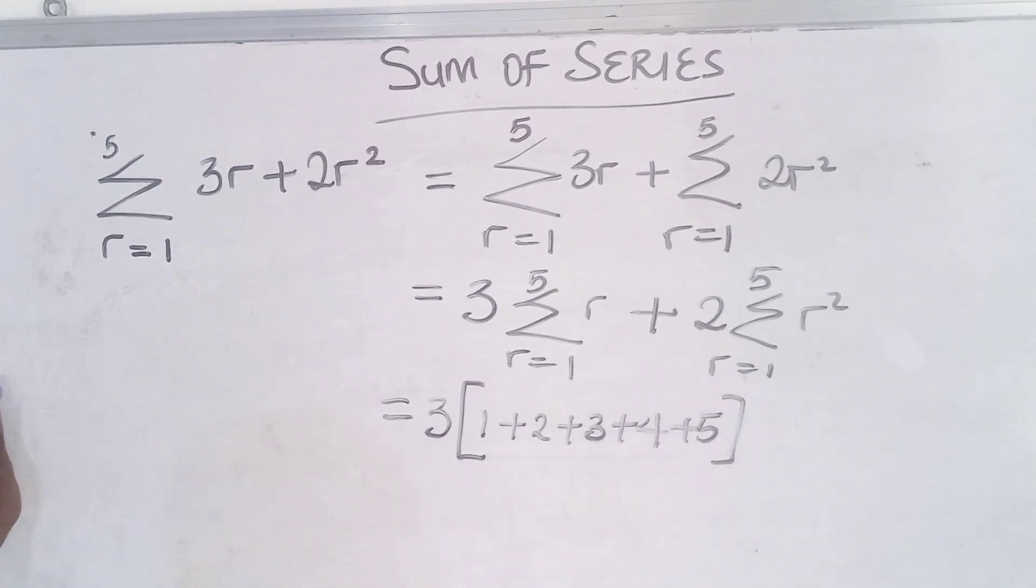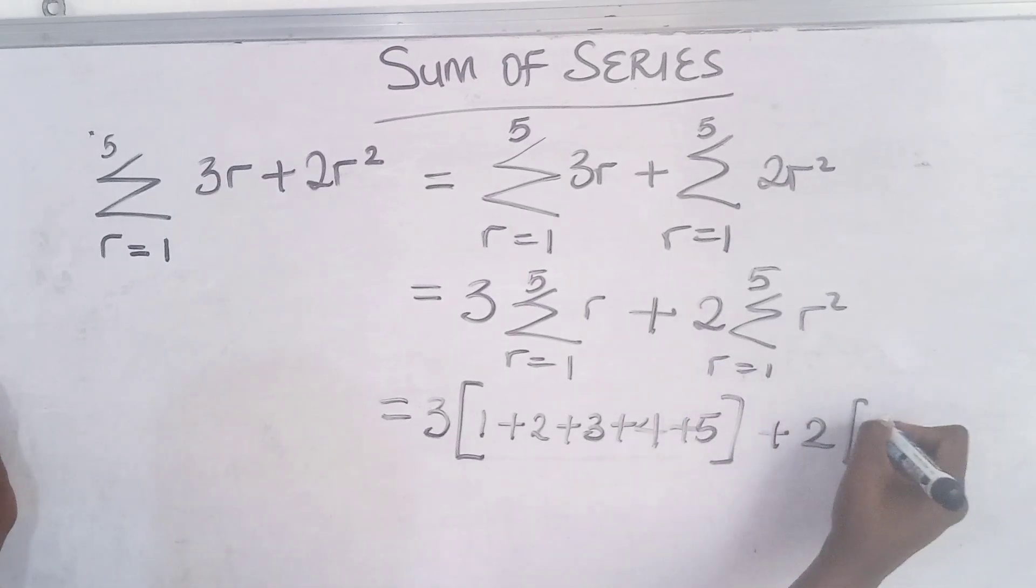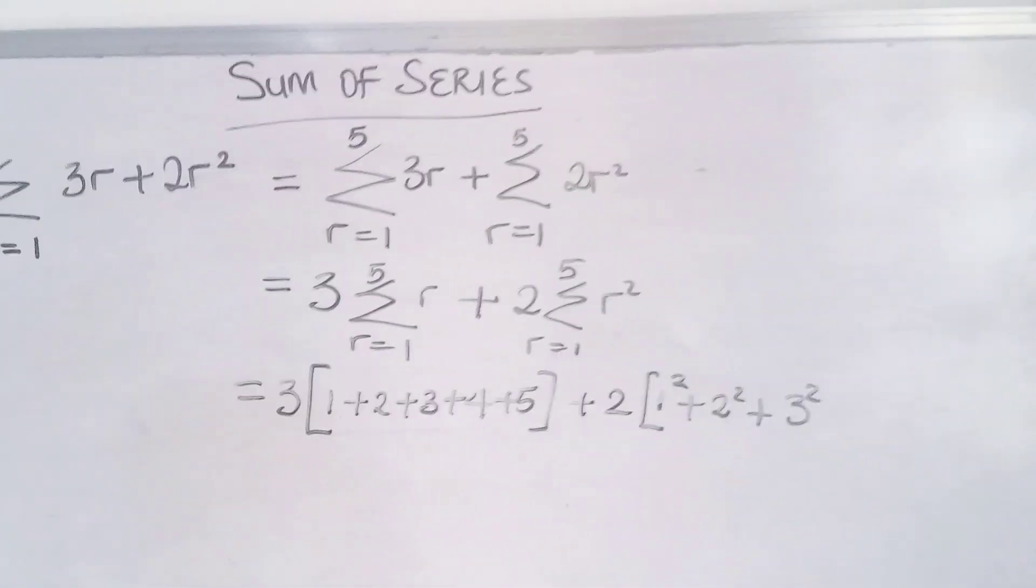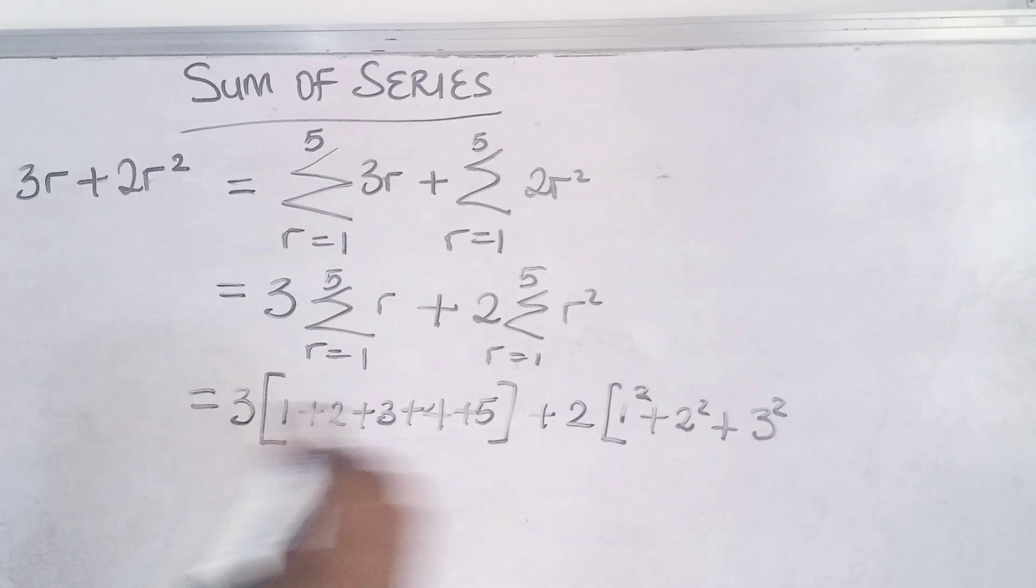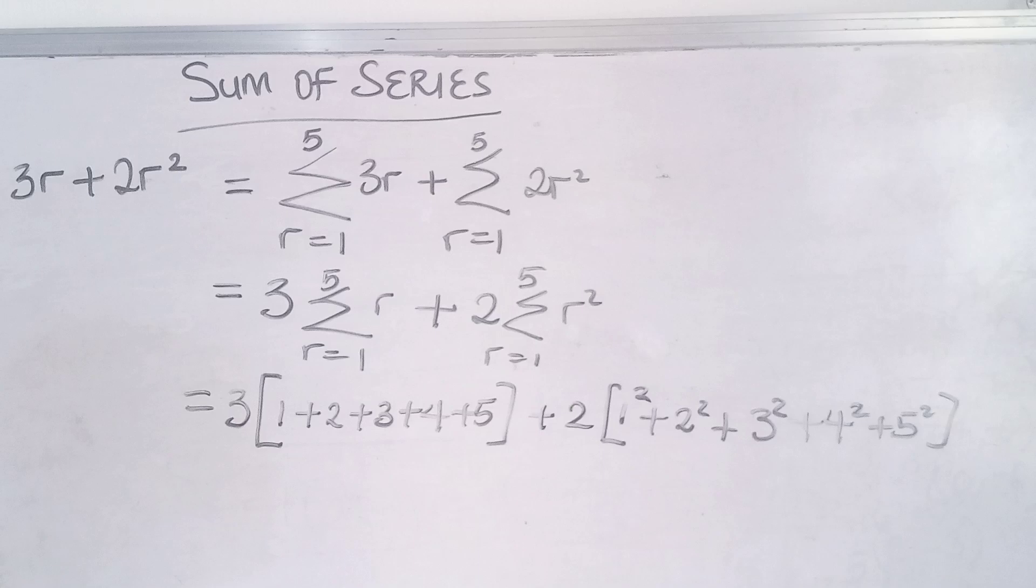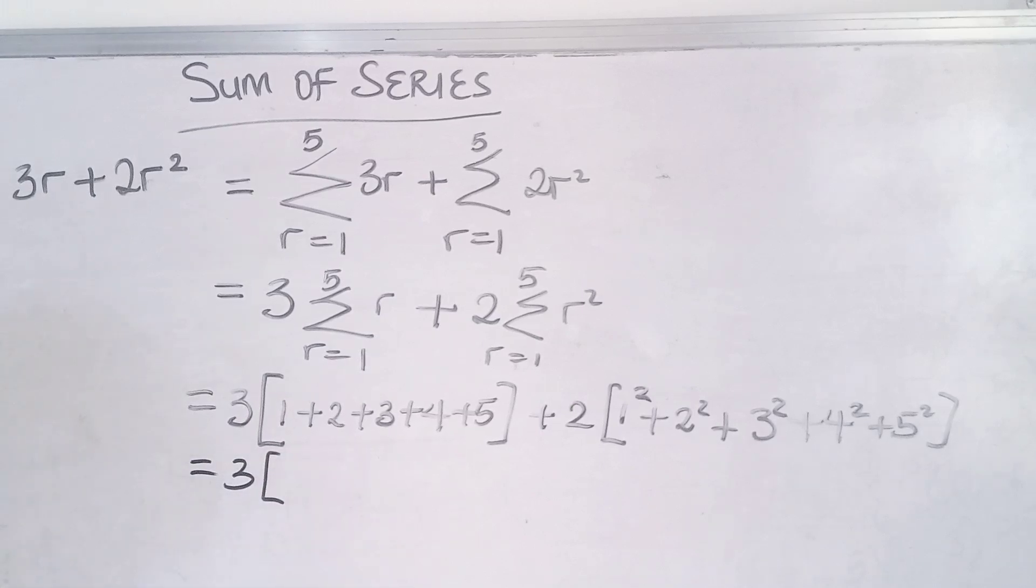Plus do the same thing for the second one. r in this case is r². So you have 1² plus 2² plus 3² plus 4² plus 5². Now you have 3 times bracket - in the bracket, 1 plus 2 plus 3 plus 4 plus 5.